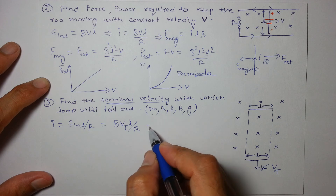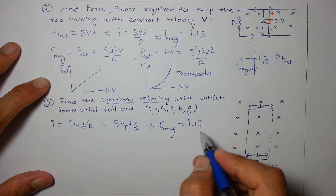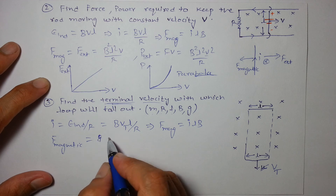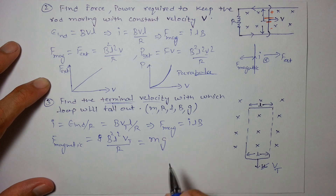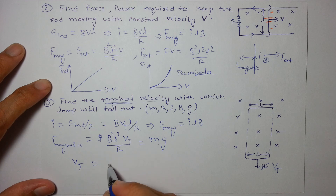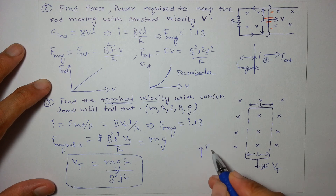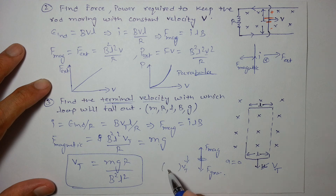At terminal velocity V_t, the induced EMF is V_t × L, giving current I = V_t × B × L / R. The magnetic force is I × L × B = B²L²V_t / R. This upward magnetic force must balance the downward weight Mg, so terminal velocity V_t = MgR / (B²L²). At terminal velocity, magnetic force acts upward and gravity acts downward — they cancel, acceleration becomes zero, and velocity remains constant.